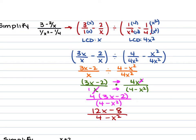If you wanted to also factor the denominator, you can. It would be (2 minus x)(2 plus x), because it's a difference of squares. However, you couldn't simplify that any further, so you can't cancel anything out. You would just leave it as either form — they're the same exact thing.